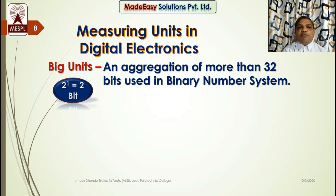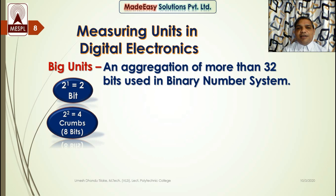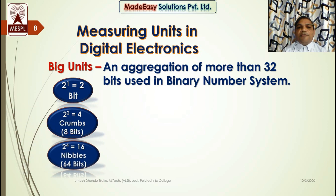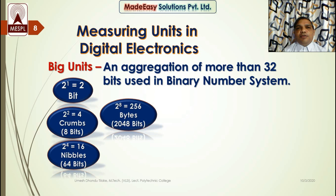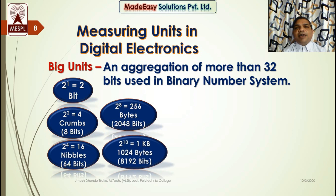Starting from the small ones: 2 power 1 equals 2 bits — we have seen 0 and 1. Then 2 power 2 equals 4 crumbs, using 8 bits. Then 2 power 4 equals 16 possible nibbles, totaling 64 bits — 4 bits in each nibble. Then 2 power 8 equals 256 bytes, totaling 2048 bits, since each byte has 8 bits and 256 multiplied by 8 equals 2048. Then 2 power 10 equals 1 kilobyte. Just as in decimal 10 power 3 equals 1000, here in binary 2 power 10 equals 1024 bytes, and 1024 multiplied by 8 equals 8192 bits. So 1024 bytes is known as 1 kilobyte.